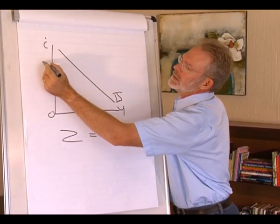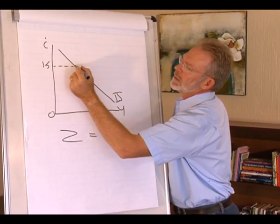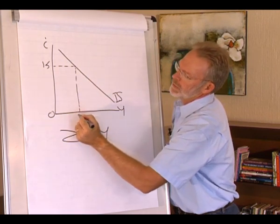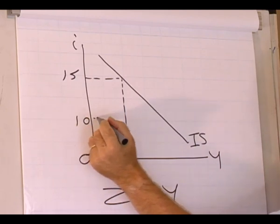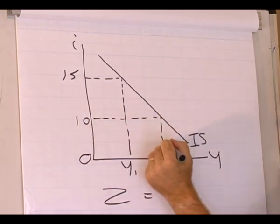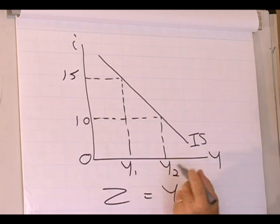For instance, at an interest rate of 15%, the goods market is in equilibrium at output level Y1. At an interest rate of 10%, the goods market is in equilibrium at output level Y2.